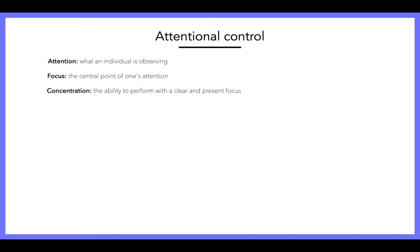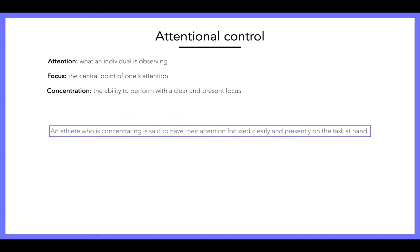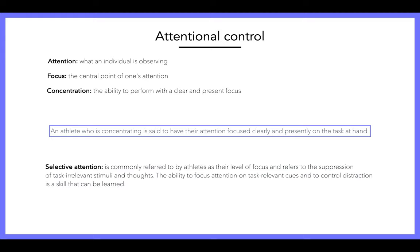It's important not to get distracted so that you can keep picking out these cues, because if you don't, you get no information and won't be able to impact the play. A standard answer for what is attentional control: an athlete who is concentrating is said to have their attention focused clearly and presently on the task at hand. Someone with high attentional control can have an effective performance because they are concentrating on task-relevant cues. This can also be known as selective attention.